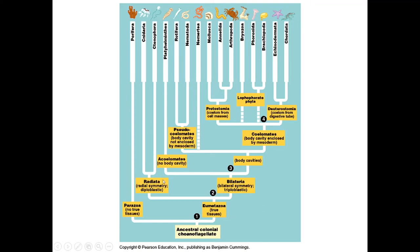Ctenophora goes into Radiata — your radial symmetry. Acoelomates are your Platyhelminthes, and Rotifera and Nematoda are your pseudocoelomates; their body cavity is not enclosed by a mesoderm. Then you have true tissues, which goes into bilateral symmetry. And then you have coelomates — this will be very handy for later in the week. I would definitely take a picture of this because it would save you a lot of Googling when it comes to your chart. Just take a picture.